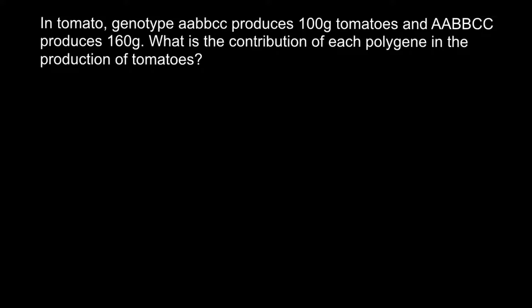Hello and welcome to Nikolai's genetics lessons. This video is going to be about plant breeding and selection. The same principles can apply to animal selection too. Here is a problem: a tomato genotype that is homozygous for three genes produces 100-gram tomatoes, and a genotype that is homozygous dominant for all genes produces 160-gram fruit. What is the contribution of each polygene in the production of tomatoes? First, let me list down the two genotypes we have here.